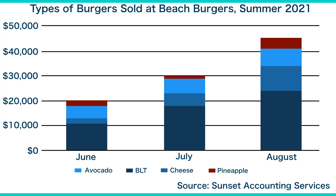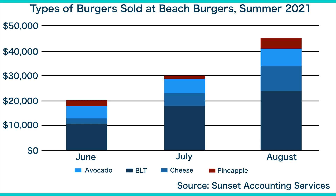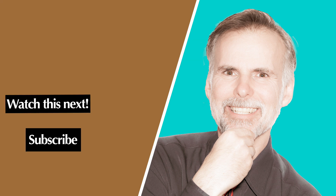Your choice of colors can direct people's attention to specific data points. In the case of Beach Burgers, the sales figures for the Pineapple Burgers are in red, a color used in accounting to signify that something is not profitable. You should also order your components so that people can quickly make comparisons between them. For example, the Bacon, Lettuce, and Tomato Burger is at the bottom of each stacked bar, creating a baseline for all the other burgers that Beach Burgers sells. Thanks for your time and I look forward to talking about another way to visualize data so that you can make your point.